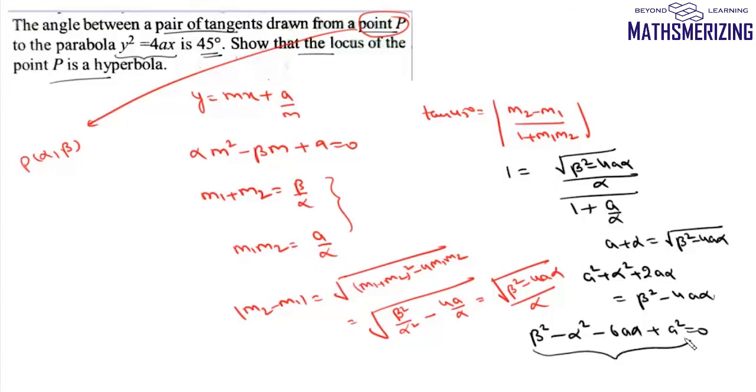We can rewrite this equation as -x² + y² - 6ax + a² = 0.